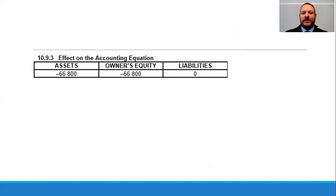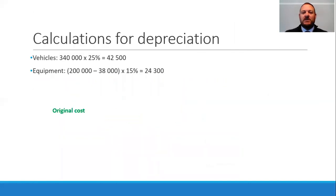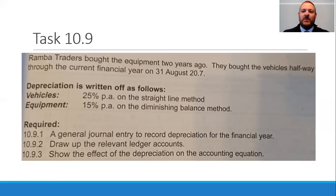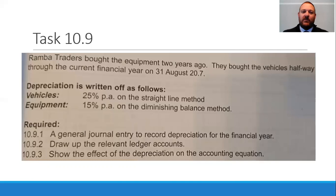Something I haven't mentioned yet: the question did state that the vehicles were bought halfway through the current financial year, on the 31st of August. So the solution doesn't actually give the correct answer because it hasn't accounted for the vehicle being bought mid-year. What you would have done is taken vehicles multiplied by 25% per annum for the full year, then halved that rate to work out the depreciation figure — because it wasn't for a full 12-month period. The solution in the book is incorrect in that regard. Hopefully that's a useful clarification before you attempt Task 10.10 in your next session.